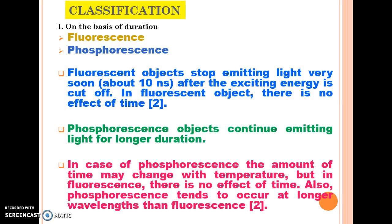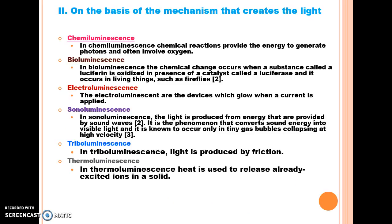We will now discuss the classification. There are two criteria for classifying this phenomenon. First, on the basis of duration, it is of two types: fluorescence and phosphorescence. Fluorescence objects stop emitting light very soon — about 10 nanoseconds — after the exciting energy is cut off, and there is no effect of temperature on time. Phosphorescence objects continue emitting light for a longer duration, and the amount of time may change with temperature. Phosphorescence also tends to occur at longer wavelengths than fluorescence.